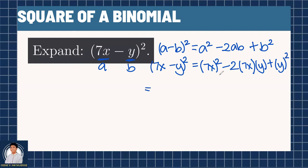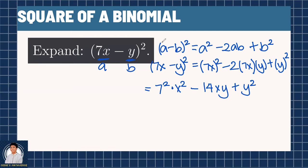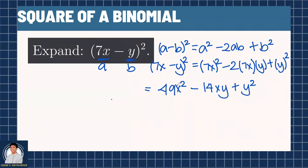Simplifying, we get 7² times x² minus, multiplying all the constants, 2 times 7 times 1 gives 14, so we have 14xy, plus y². Since there is no constant in y, we just leave it as y². Then 7² = 49. So our final answer is 49x² - 14xy + y².